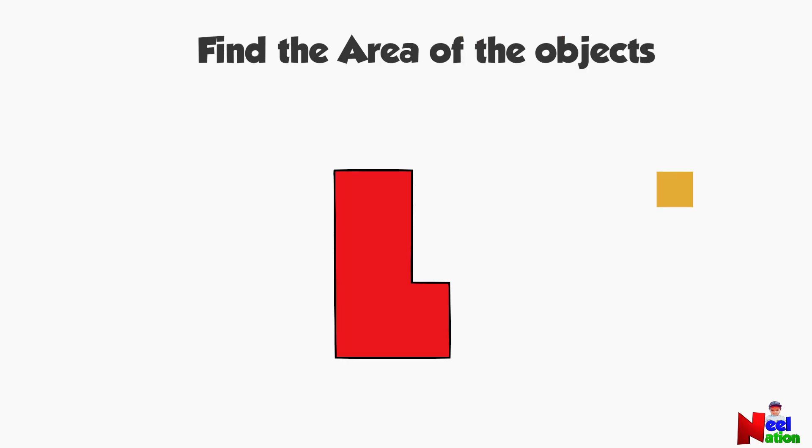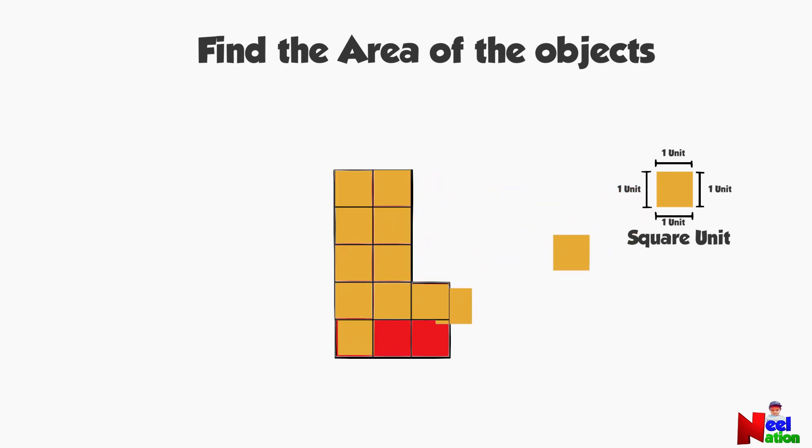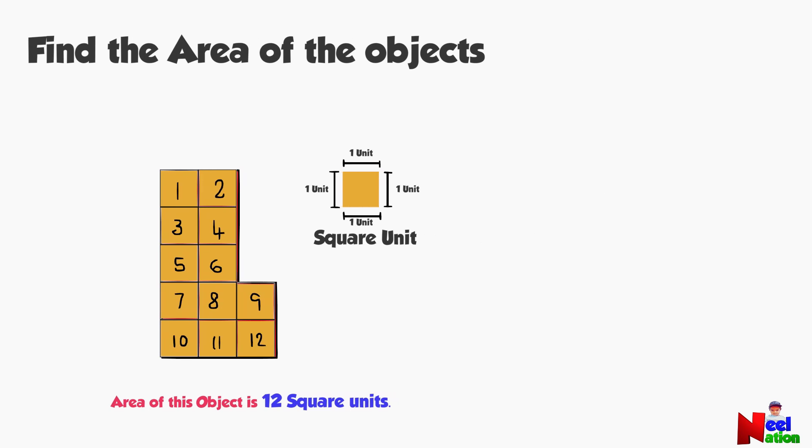Let's find the area of the object using smaller squares called square units. A square unit has a length of one unit on all its four sides. Let's cover the area of this shape with these squares. The area of this object is 12 square units.